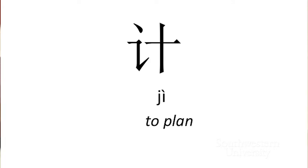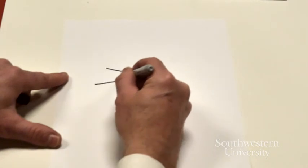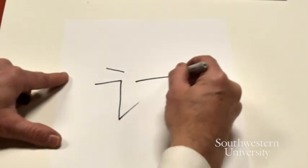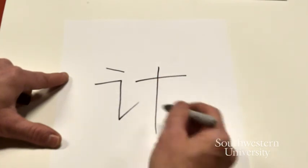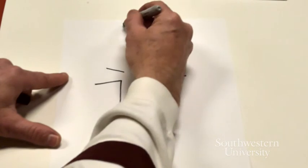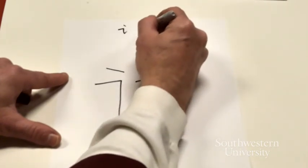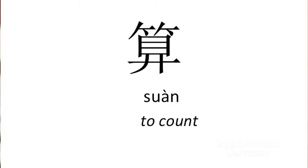Ji, to calculate, to plan, is just the speech radical, dian, heng, zhe, ti, and shi, as a phonetic, heng, shu, to number things, to count them. And the radical yen comes from yen, to speak, to speech, to express yourself.